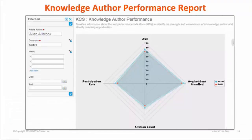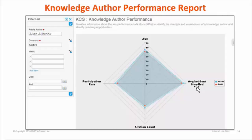The next report is the Knowledge Author Performance report. This radar chart report enables you to analyze the performance of your team members based on the following performance metrics: first, the participation rate, which is the proportion of the number of times incidents are closed by using knowledge articles to the total number of incidents closed; second, the AQI, that is the article quality index; third, the citation count, the number of times an author's articles are attached to incidents by other users; and fourth, the average incidents handled, which is the proportion of the number of incidents resolved to the number of incidents assigned to a user. We saw detailed reports of all four metrics, and this is the overall summary report based on those, giving the knowledge author overall performance report to the KCS coach.